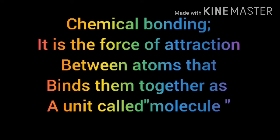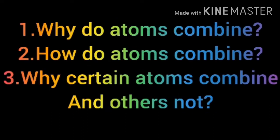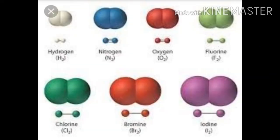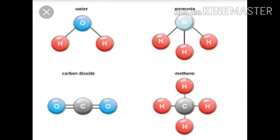Let us see the definition of chemical bonding. Chemical bonding is a force of attraction between the atoms that binds them together as a unit called a molecule. Without chemical bonding, there is no molecule. A molecule is a group of atoms — it consists of two, three, or more atoms — and these atoms are firmly held together by a chemical bond.